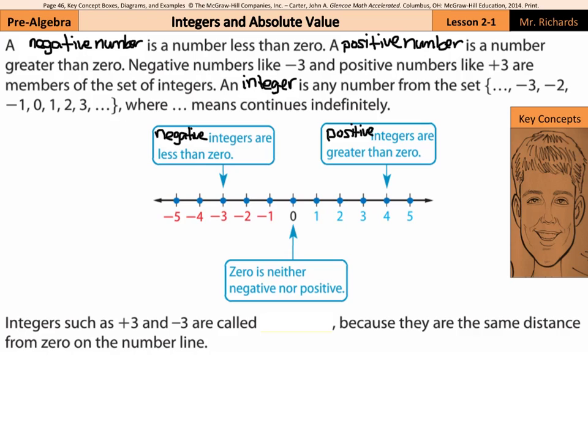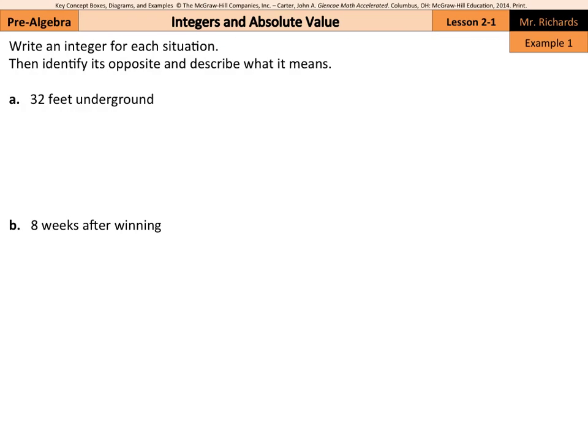Integers such as positive three and negative three are called opposites because they are the same distance from zero on the number line. In our first example, we are asked to write an integer for each situation, then identify its opposite and describe what it means.